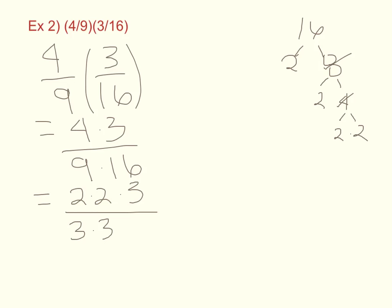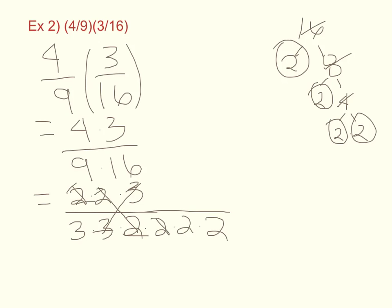So now just looking at our prime numbers, we have 1, 2, 3, 4 2's, and that's going to go back in our denominator. Now let's see where our equivalent forms of 1 are. 3 over 3 here is an equivalent form of 1, and 2 over 2 is another equivalent form of 1, and that's it.